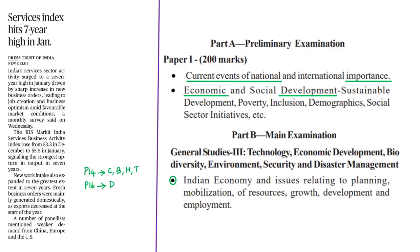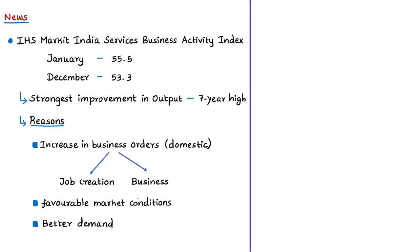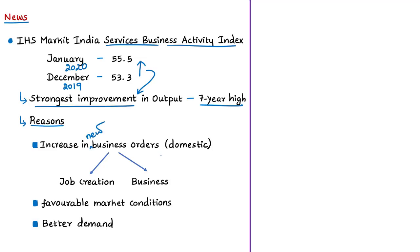The next news article covers the Services Business Activity Index. The IHS Markit India Services Business Activity Index rose from 53.3 in December 2019 to 55.5 in January 2020, signaling the strongest improvement in services sector output in the last seven years — meaning India's services sector activity surged to a seven-year high in January 2020. The sharp increase was mainly driven by new business orders generated from the domestic sector.